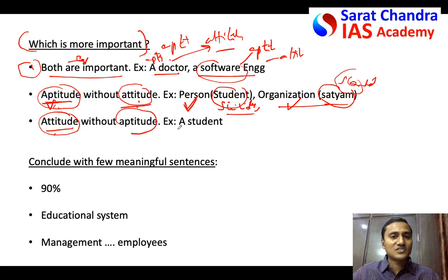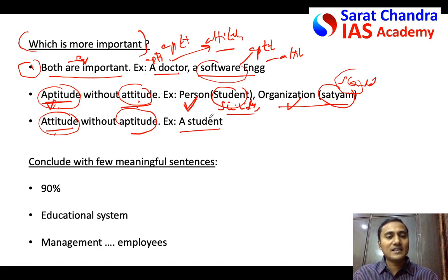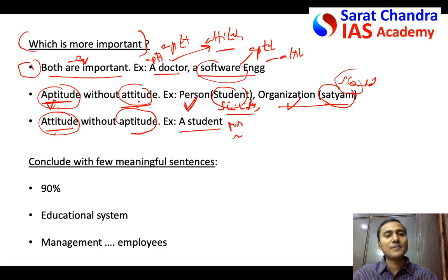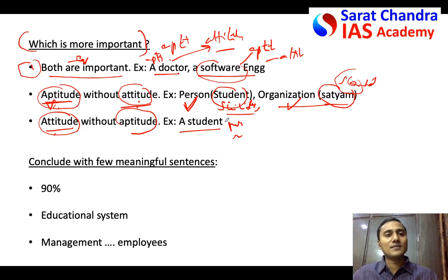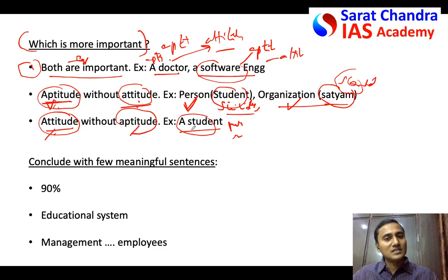Now consider a person having good attitude but poor aptitude. Take a student who has the right attitude — he respects teachers, is ready to work hard, and is humble. Even if he is poor in mathematics or sciences, he can be trained. You have to find a method of training him so that he can learn. A student having the right attitude but poor aptitude — his life may not be ruined if you can train him properly.